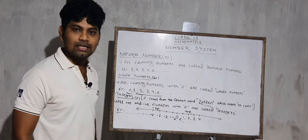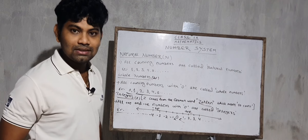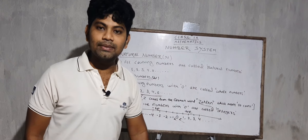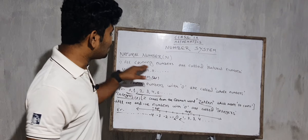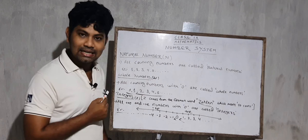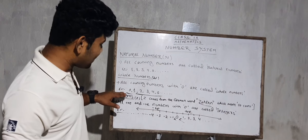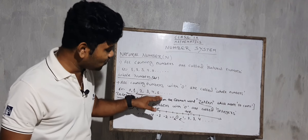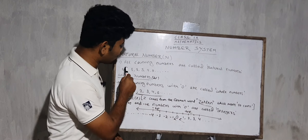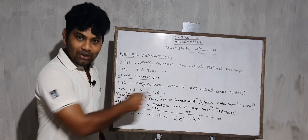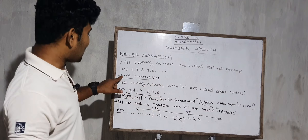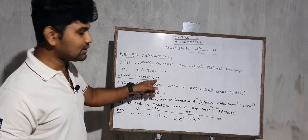Then come to the whole numbers. So what are whole numbers? All counting numbers with zero are called whole numbers. So natural numbers plus zero gives us whole numbers: 0, 1, 2, 3, 4, up to infinity. Whole number is denoted by W. Why W? Because the first letter of 'whole' is W. That's why we take W as the whole number.